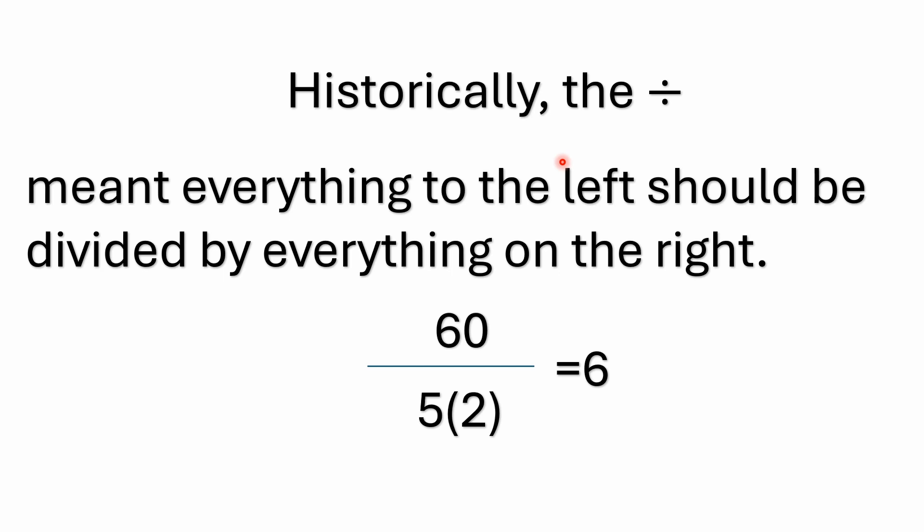There are people out there who will argue the answer is 6. Historically, the obelus — the division symbol — had a different interpretation than the way it's interpreted in modern times. Going all the way back to 1659 in the book Teutsche Algebra, and continuing maybe a little more than a hundred years ago, in some cases the obelus was interpreted to mean that everything to the left is divided by everything on the right — everything to the left in the numerator, everything to the right in the denominator. Given that interpretation, 60 divided by 5 times 2 becomes 60 divided by 10, which equals 6. So historically, that interpretation would be valid.